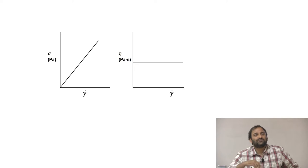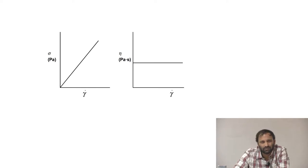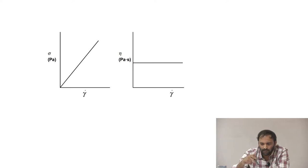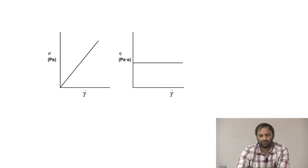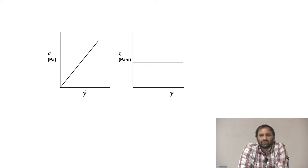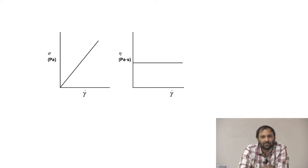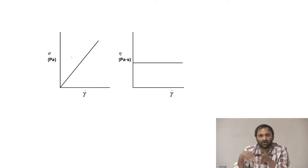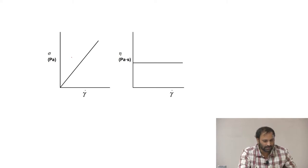There are different types of fluids. There is a plot of shear stress as a function of shear rate, and another plot of viscosity as a function of shear rate. Newtonian fluids are a classic class where stress is proportional to shear rate, and the viscosity measured as a function of shear rate is constant.